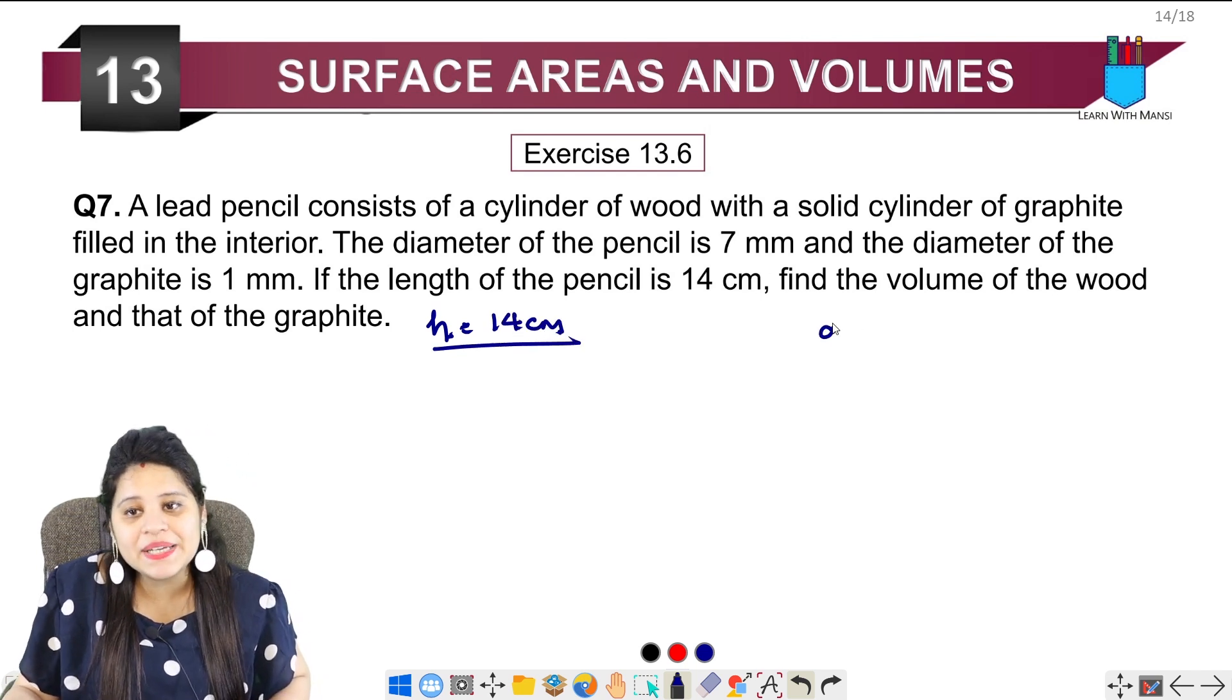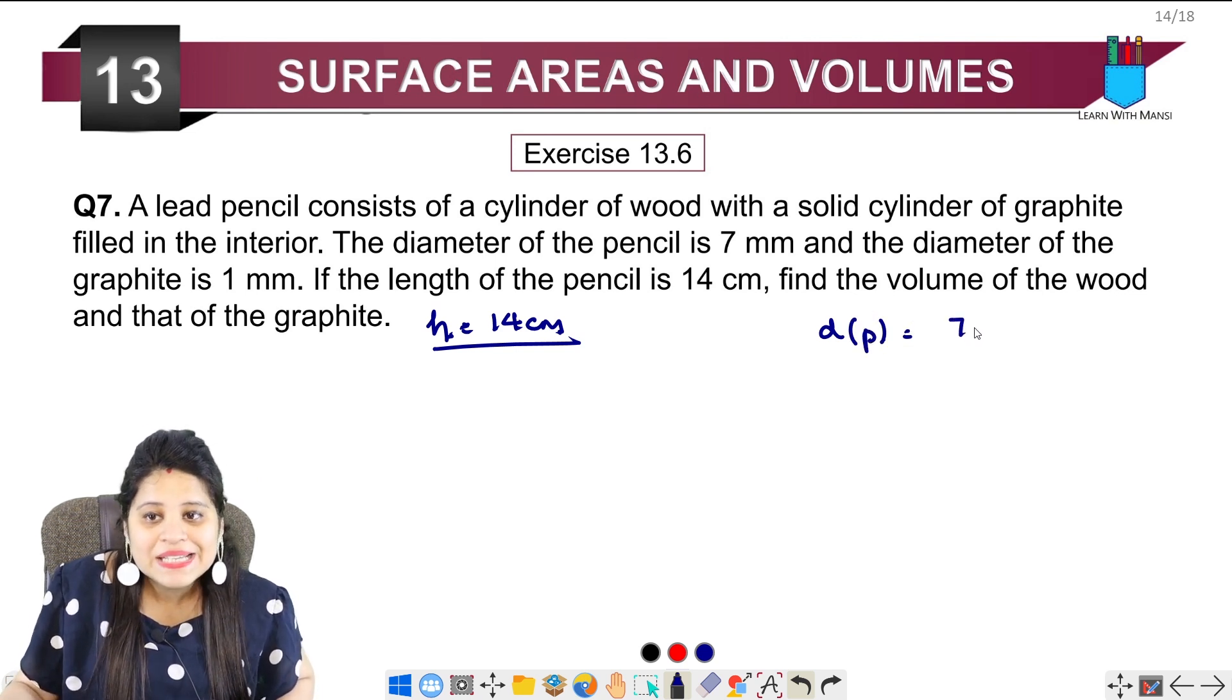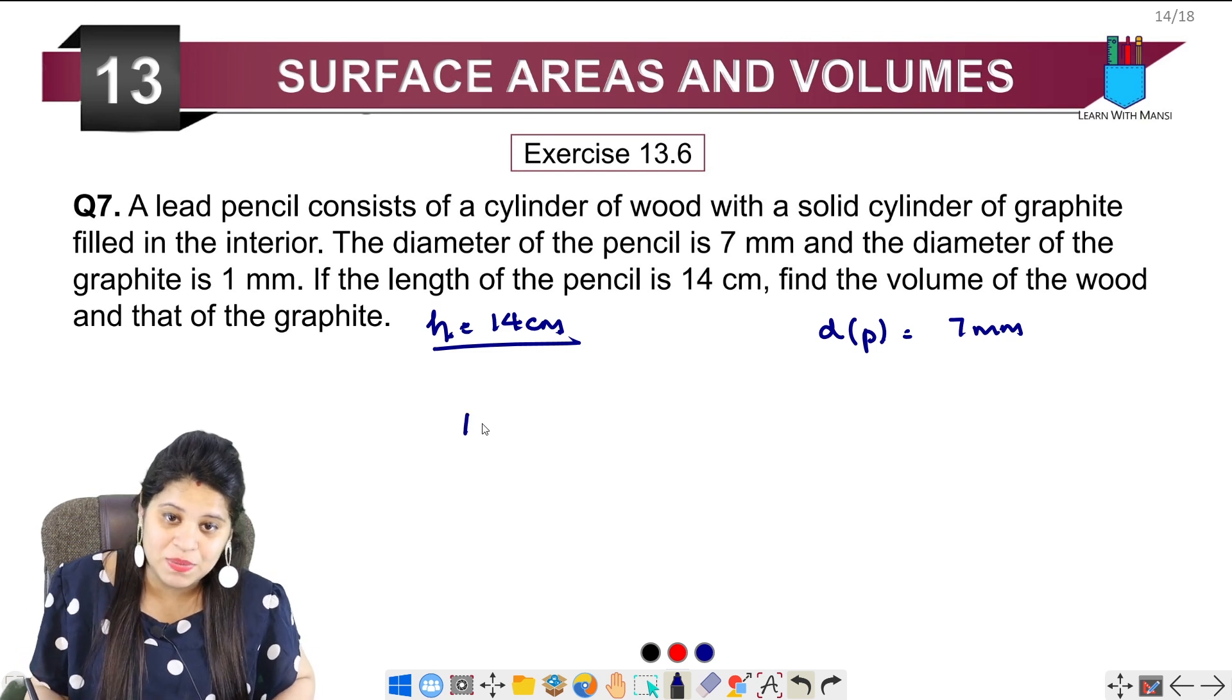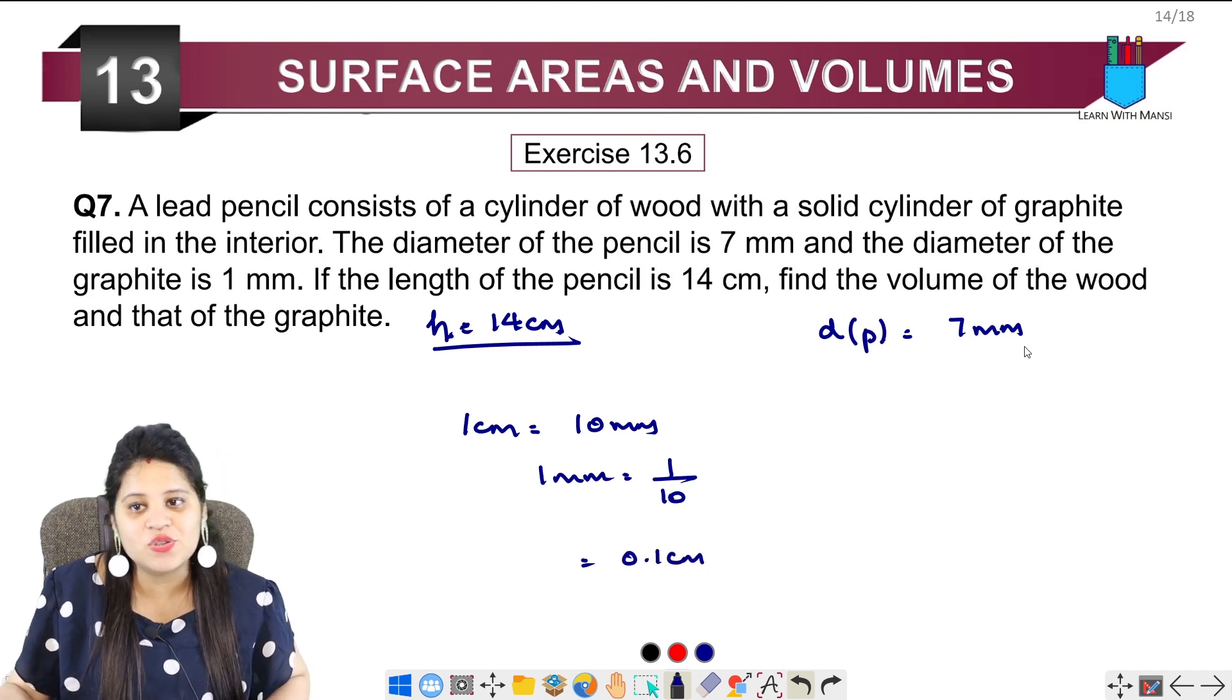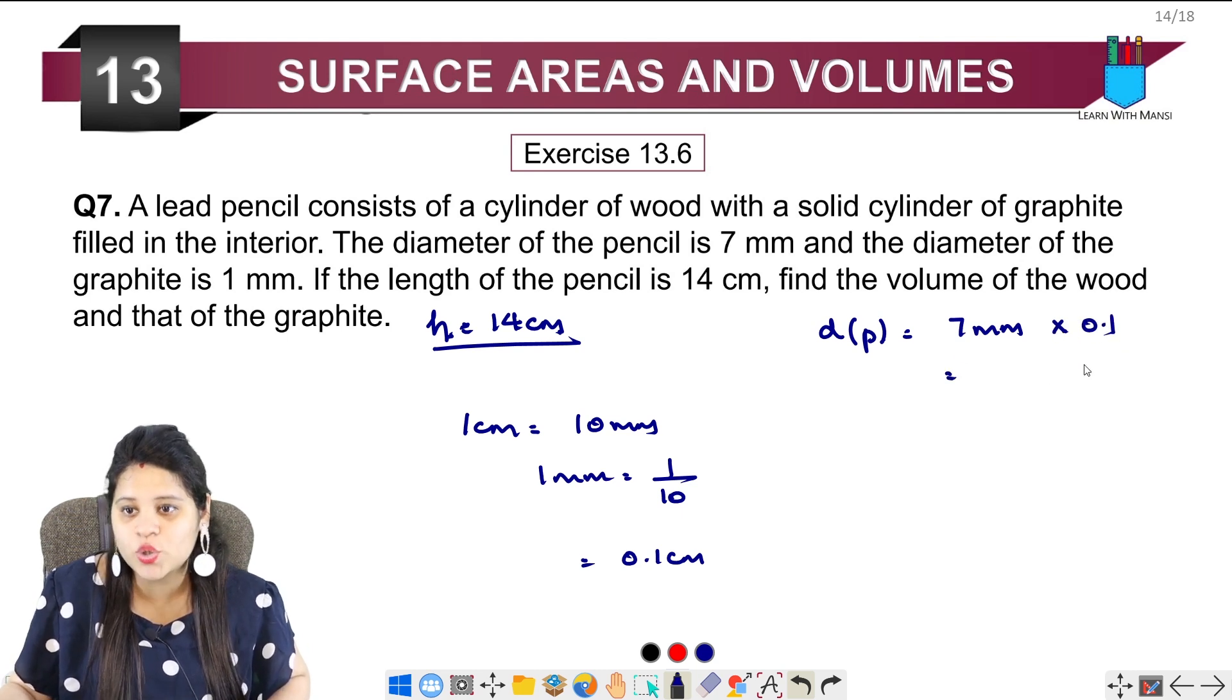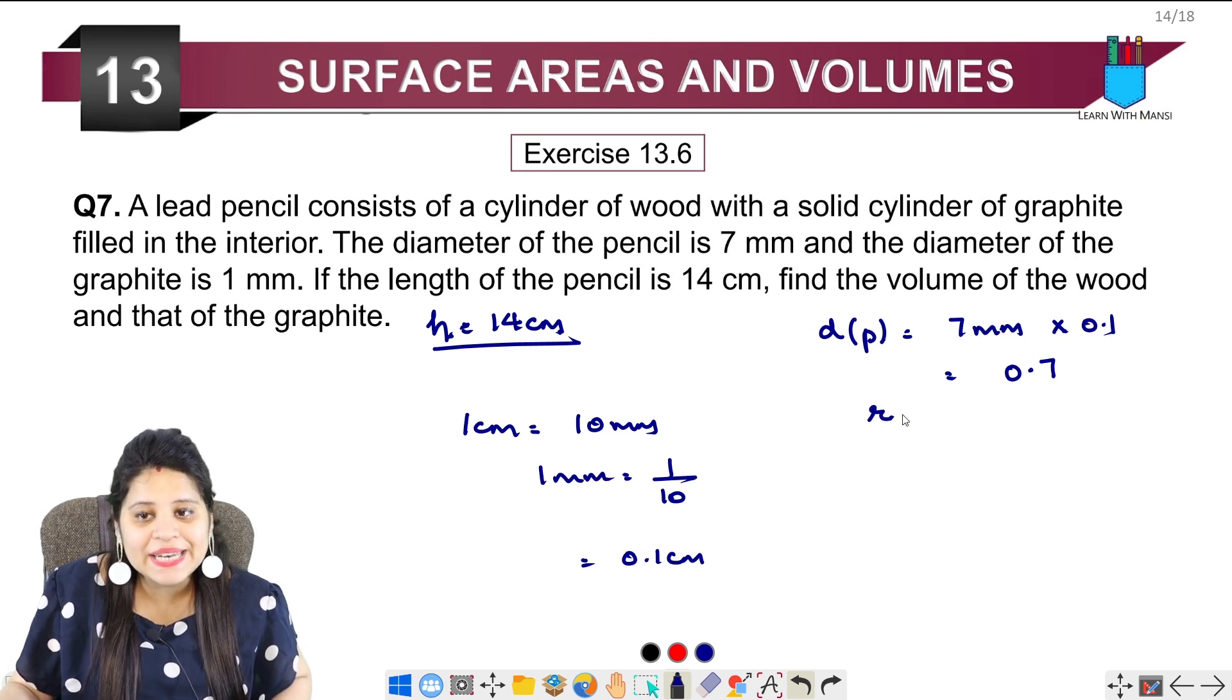Now if we talk about diameter of the pencil, we can call it 7mm. So first of all, we have to convert it from radius. Now 1cm is 10mm which means 1mm equals to 1 upon 10cm or we can call it 0.1cm. Multiply it by 0.1. So it will be 0.7.